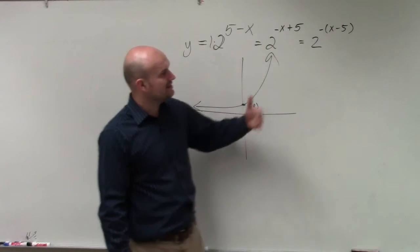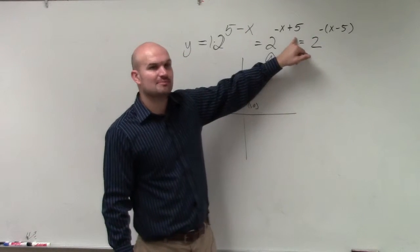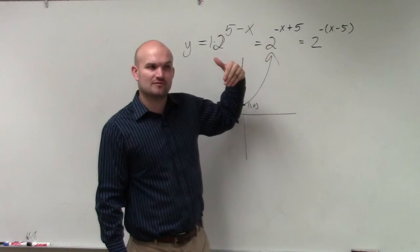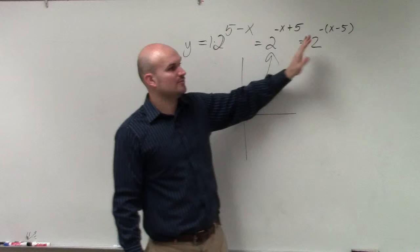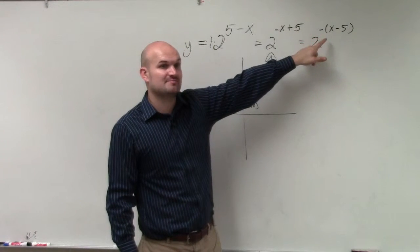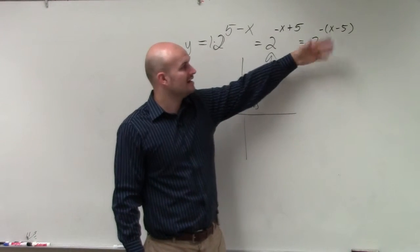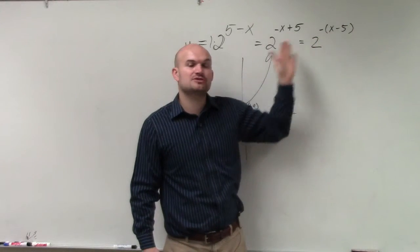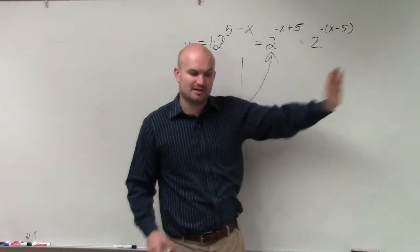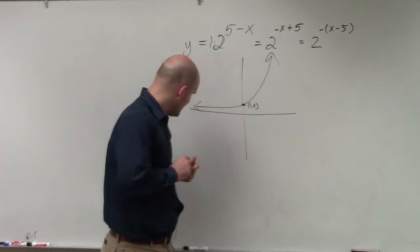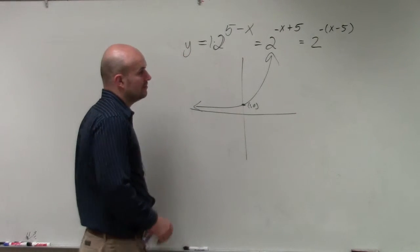The reason why that's important is because if you said plus 5, you'd say, oh, it's been shifted to the left 5, right? But when I factor out the negative and I see, oh, this negative is making this a reflection, I actually have an x minus 5, which tells me I'm shifting my graph to the right. So the negative tells me I reflect about the y-axis.